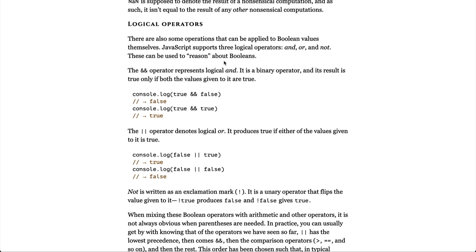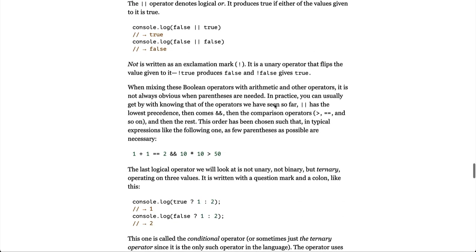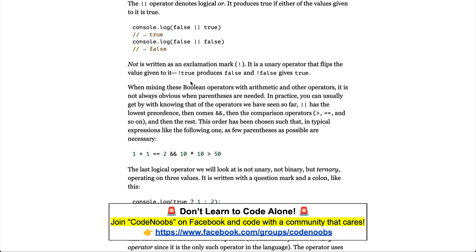Logical operators. There are also some operators that can be applied to boolean values themselves. JavaScript supports three logical operators: and, or, and not. These can be used to reason about booleans. The ampersand ampersand operator represents the logical and. It is a binary operator, and its result is true only if both the values given to it are true. The pipe pipe operator denotes logical or. It produces true if either of the values given to it is true. Not is written as an exclamation mark. It is a unary operator that flips the value given to it. Not true produces false, and not false gives true.